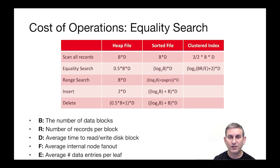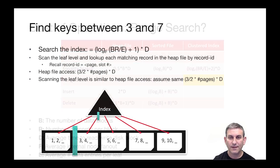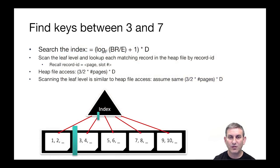Now let's look at range search. We're going to find the keys between three and seven. Again, we're going to search the index walking from root to leaf. That's log base F, BR over E plus one times D. And then when we get to the leaf level, we're going to scan the leaf level of the index and look up each matching record in the heap file by record ID. And it's going to look a little bit like this because remember we have a clustered index. So the heap file is pretty much in the order of the leaf level, which means as we follow pointers out of the leaf level, we will mostly be looking at pages that are sequential in the heap file.